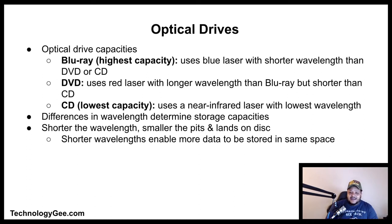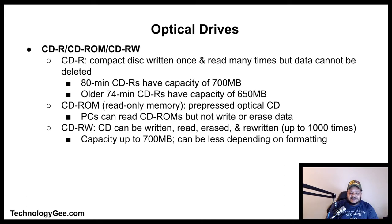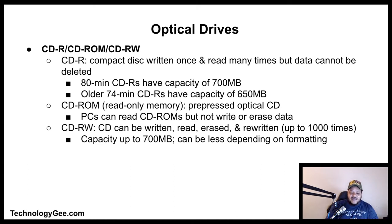A CD-R is a compact disk that can be written once and read many times but data cannot be deleted. 80-minute CD-Rs have a capacity of 700 megabytes; older 74-minute CD-Rs have 650 megabytes. A CD-ROM is a pre-pressed optical compact disk that computers can read but not write to or erase. A CD-RW is a compact disk that can be written, read, erased, and rewritten up to 1,000 times, with a capacity up to 700 megabytes.